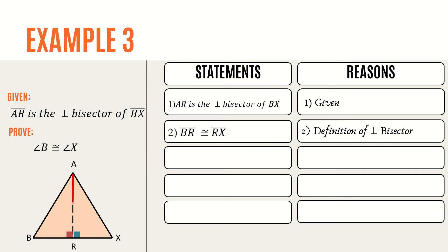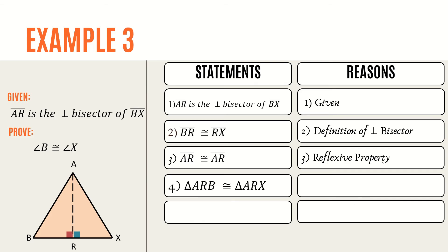For our third statement, side AR is congruent to side AR. The property used is the reflexive property. In consideration of statements 1, 2, and 3, we can state that triangle ARB is congruent to triangle ARX — this is our fourth statement. We derived this through the LL congruence property. The LL, or leg-leg, congruence property states that if the two legs of one right triangle are congruent to the two legs of another right triangle, then the two right triangles are congruent.